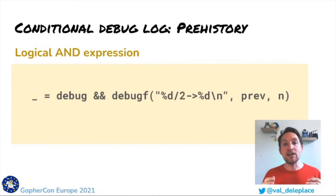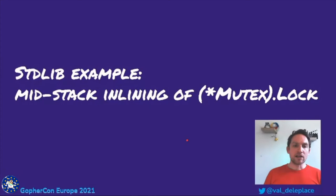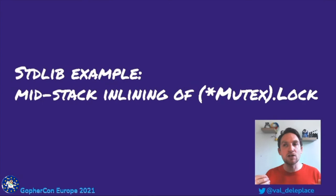This sort of syntax is no longer necessary. Now we can have simple and efficient debugf calls, as we've seen in the Collatz example. Here is the true story of an inlining optimization with a happy ending. In the past, the compiler used to inline only leaf functions — that is, functions that don't call any other function.